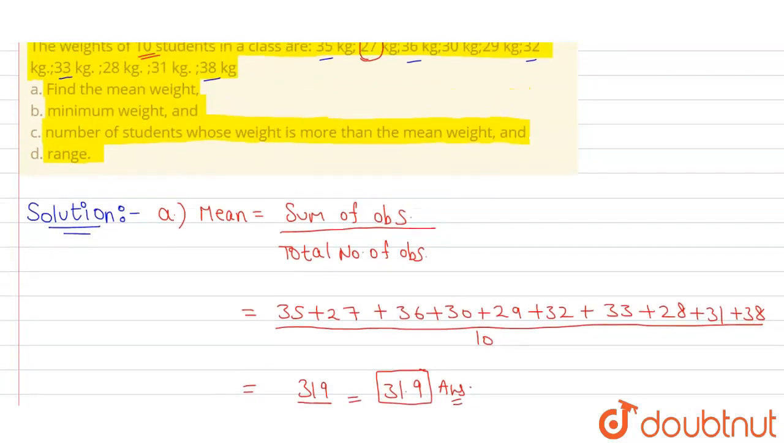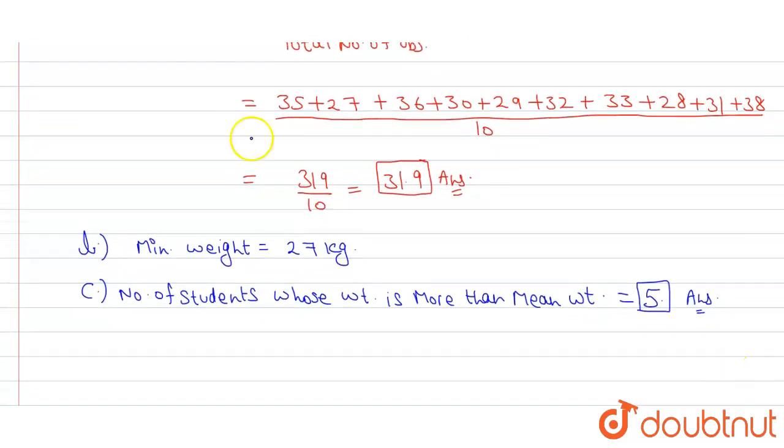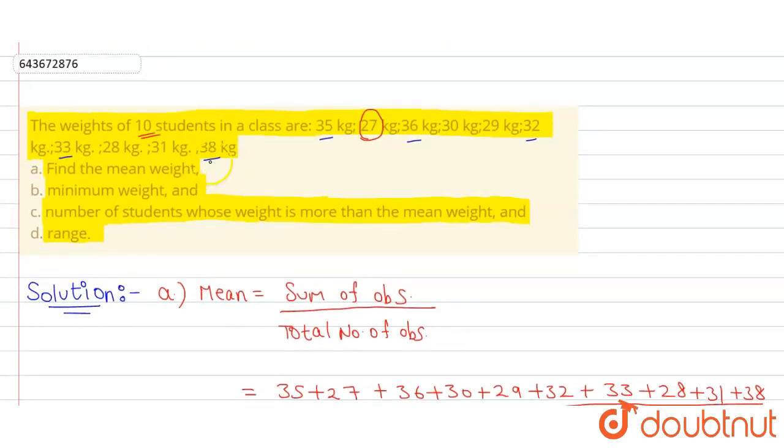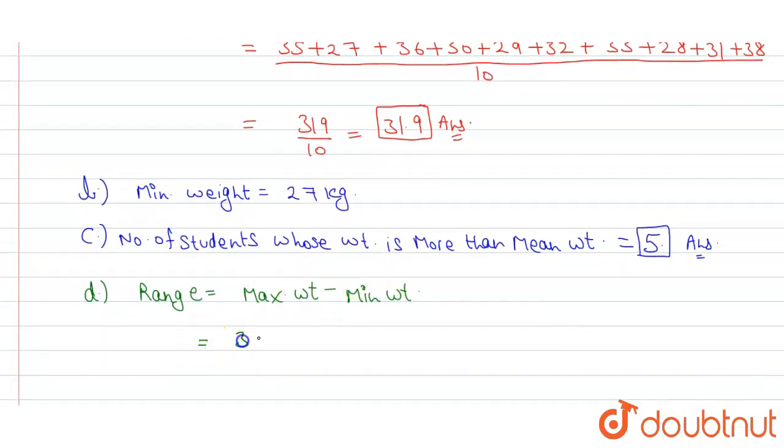Now final part is, we have to find the range. Range is the maximum value minus minimum value. So range will be maximum weight minus minimum weight. Maximum weight is 38 kg and minimum weight is 27 kg. Therefore, 38 minus 27 will be 11. So our range is 11.